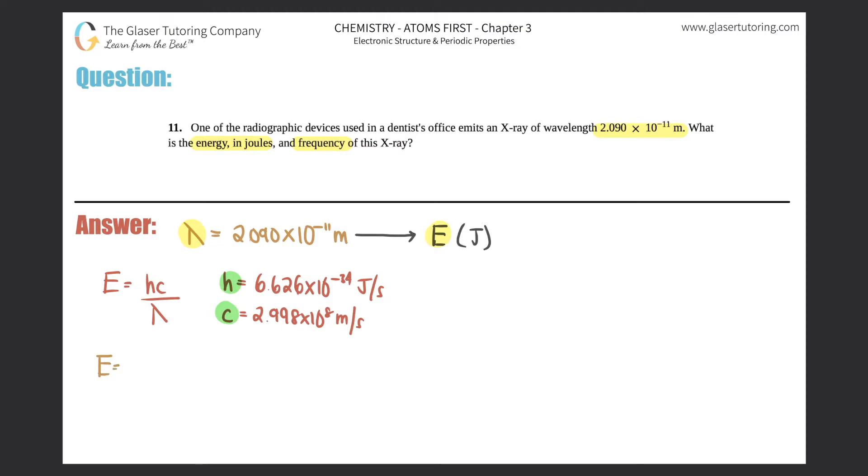So the energy equals 6.626 times 10 to the negative 34th, which is h, times c, which is 2.998 times 10 to the eighth. You can round it and say it's just 3 times 10 to the eighth, but this is the number the textbook gives you, so I'm just going to stick with that. This is all divided by the wavelength, which is 2.090 times 10 to the negative 11th. Now we just put it all into the calculator and solve for energy.